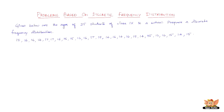In this video, let us solve problems based on discrete frequency distribution. The question goes like this: given below are the ages of 25 students of class 9 in a school, prepare a discrete frequency distribution. Now these are the ages of 25 students of class 9. Let us follow the steps discussed in the previous video and construct a discrete frequency distribution.